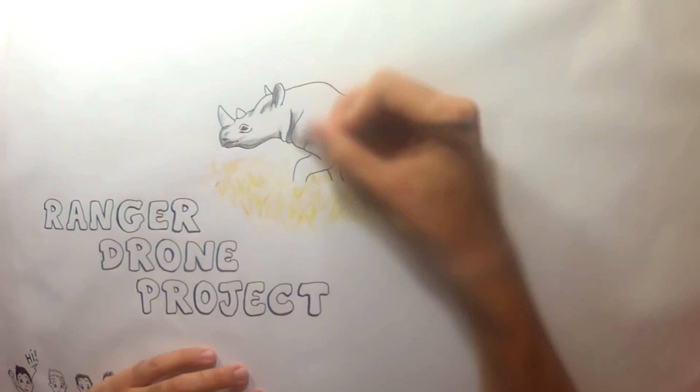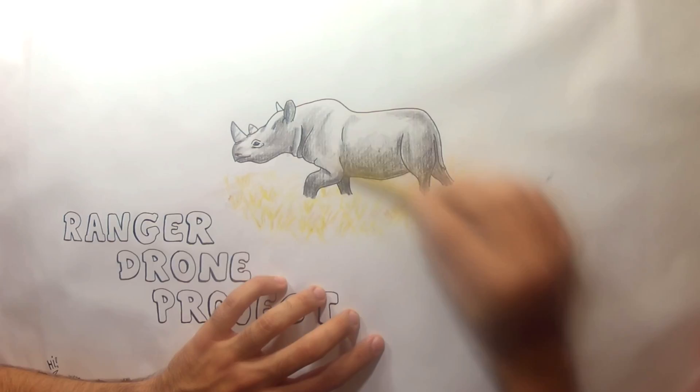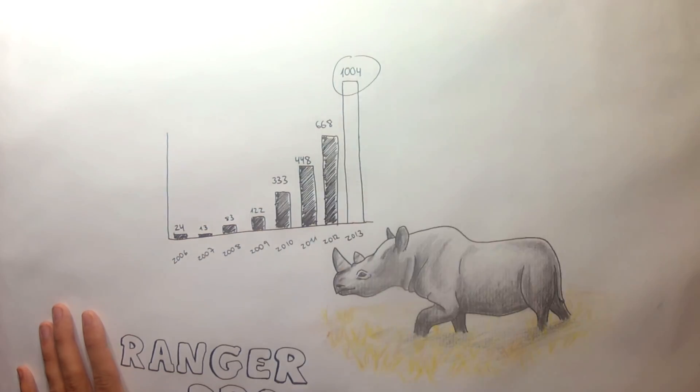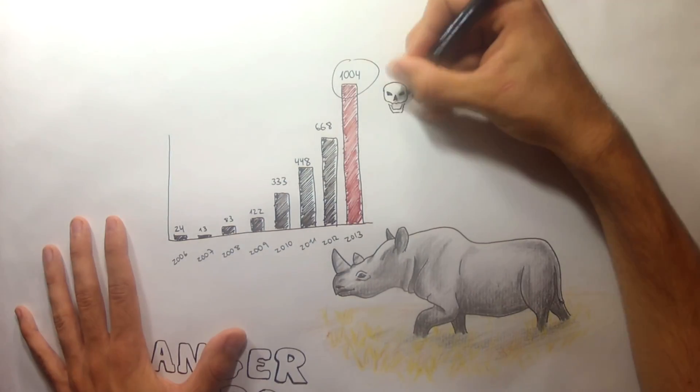During the past few years, the poaching activity has increased to an alarming level around the world, from tigers of Thailand to elephants of Kenya. One of the most critical cases is the pursuit of the South African Rhino, where every day three rhinos are hunted down for their horns.